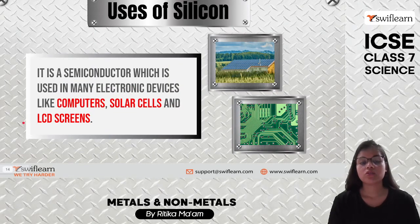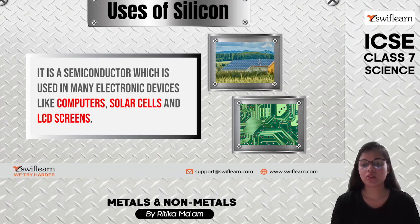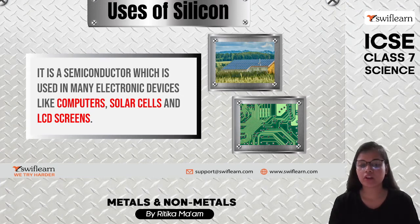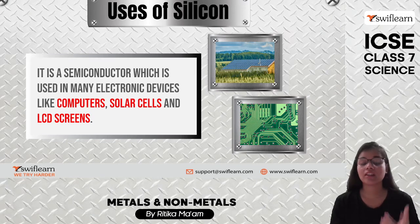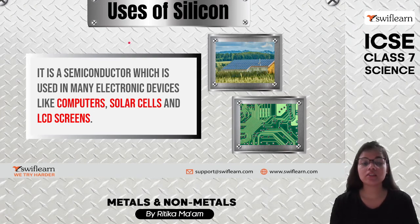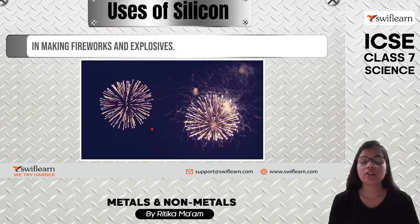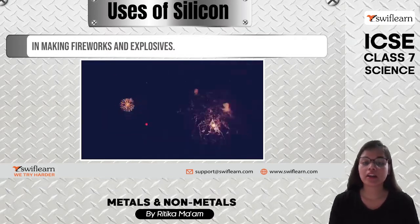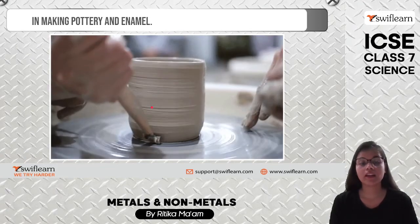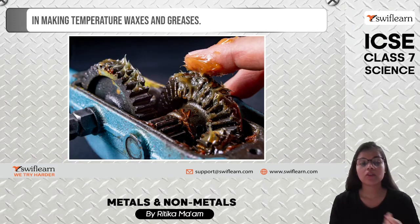Silicon is a semiconductor with many electronic device uses. It is used in making chips, computers, solar cells, LEDs, and LCD screens. Silicon is also used in fireworks and explosives, in pottery and enamel, and in making temperature waxes and greases.